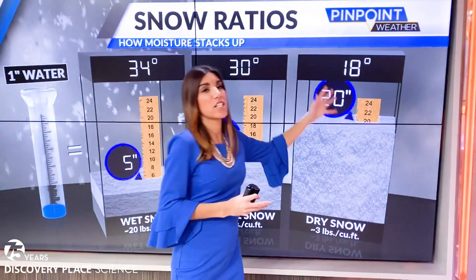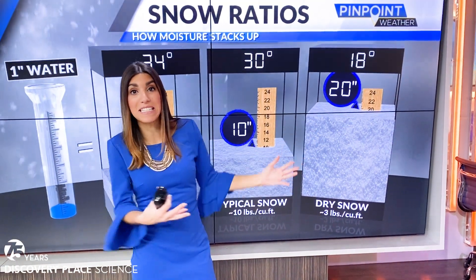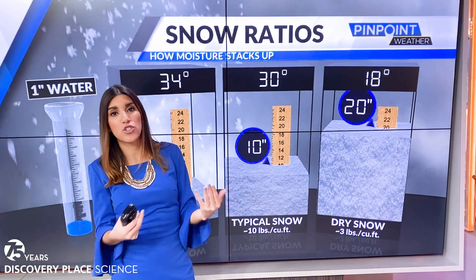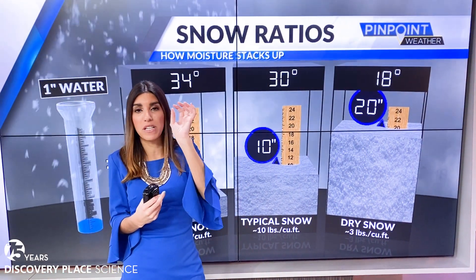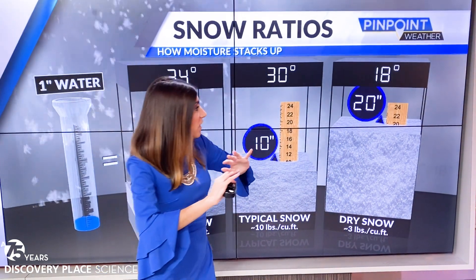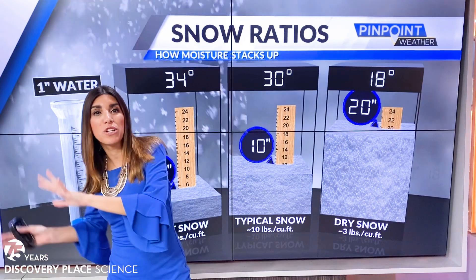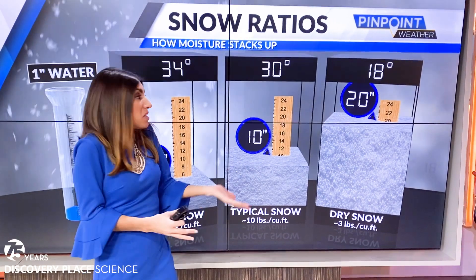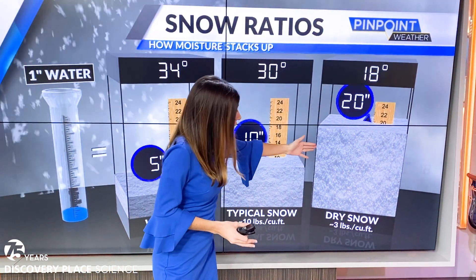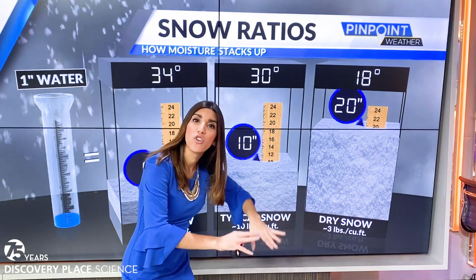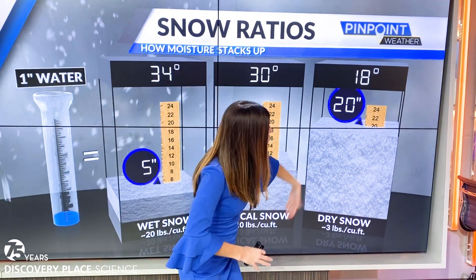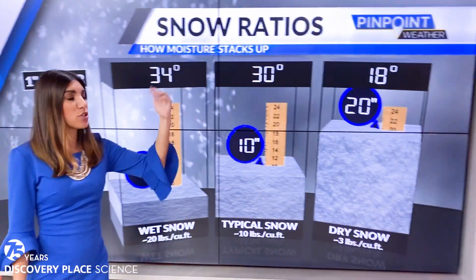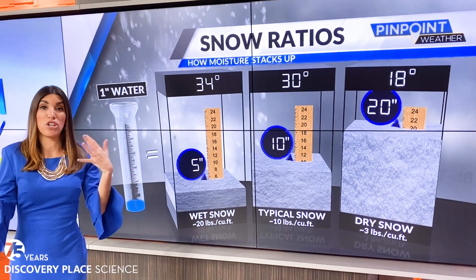On the flip side, in a very Arctic storm with temperatures in the teens and 20s, you get a very dry snow, because colder air doesn't hold as much moisture and there's more dry air between the pieces of the snowflake. That gives you very fluffy, powdery snow — whiteout conditions with snow flying everywhere — and it doesn't make good snowmen. But it piles up, so you could be looking at 20 inches of snow in the same storm just because temperatures are a little cooler and the air is drier.